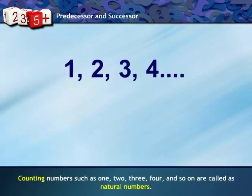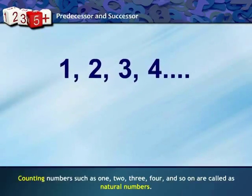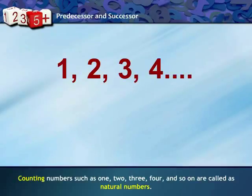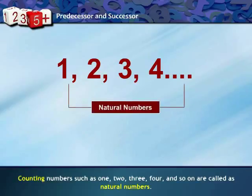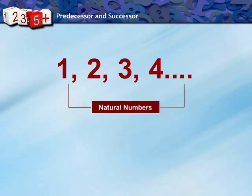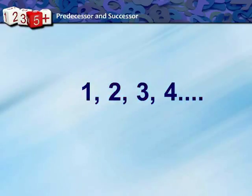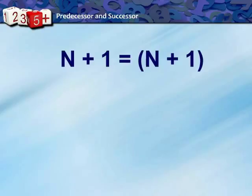We have already learnt about counting things in numbers such as 1, 2, 3, 4. These numbers are called natural numbers. We can write it as a set of natural numbers denoted as capital N, where N is equal to {1, 2, 3, 4, ...} extending to infinite numbers.